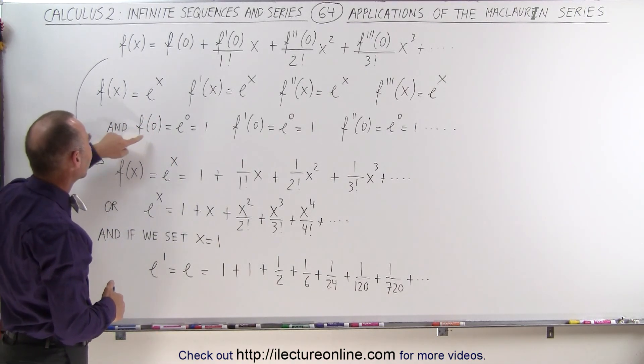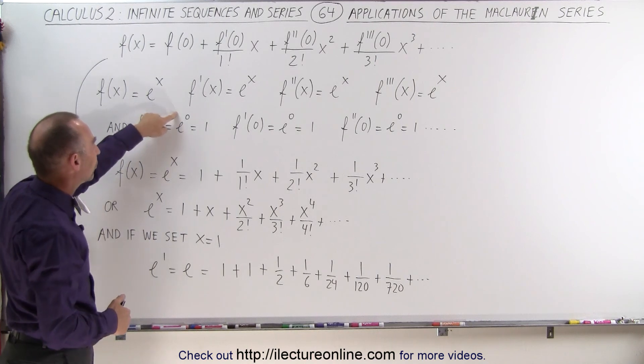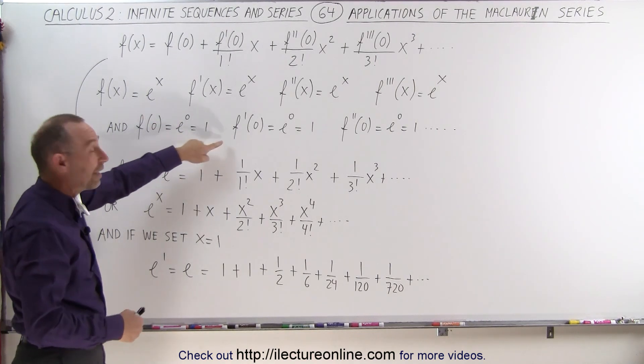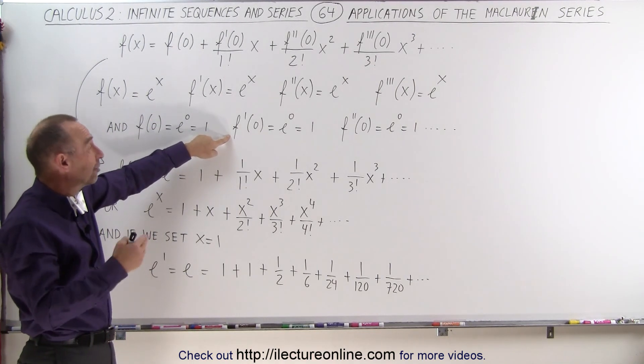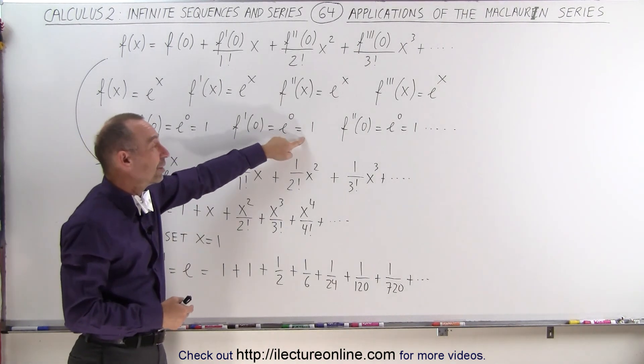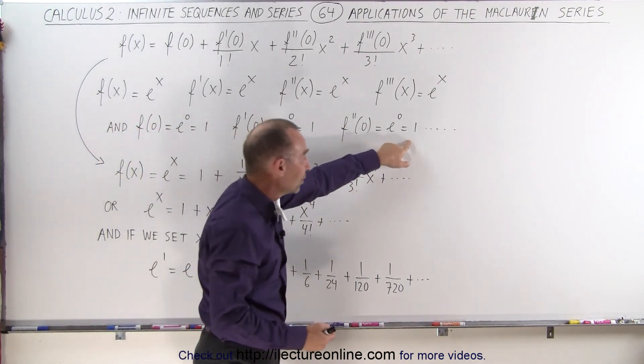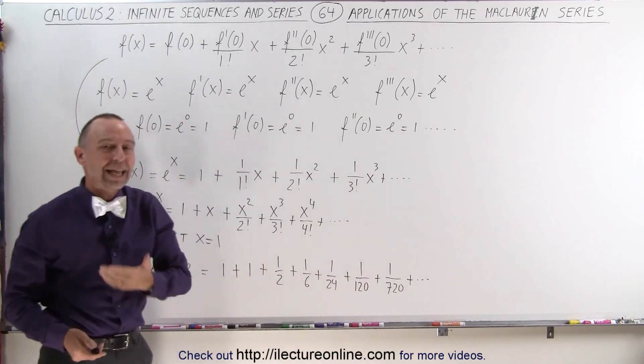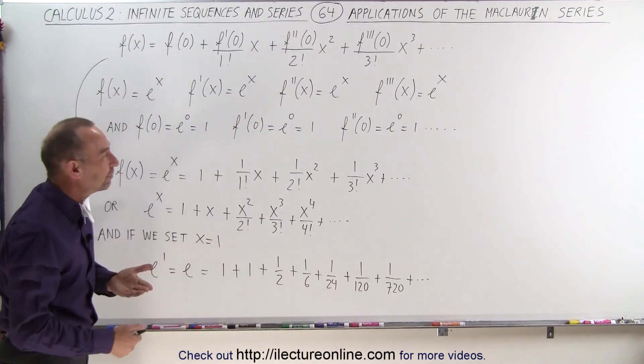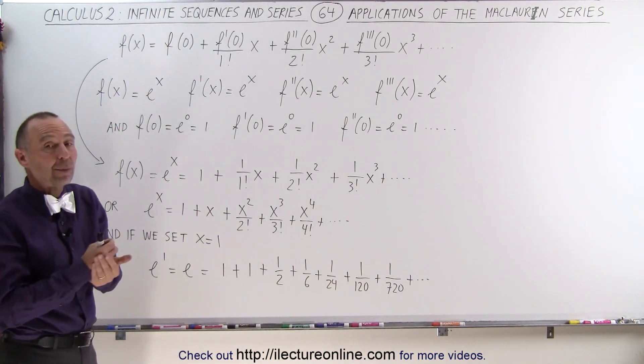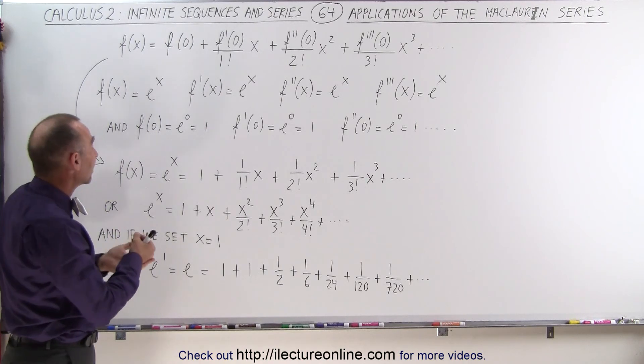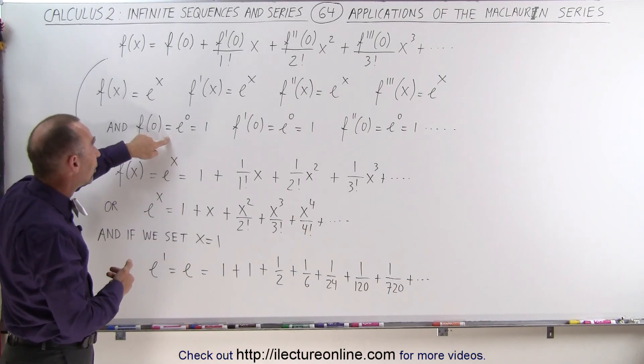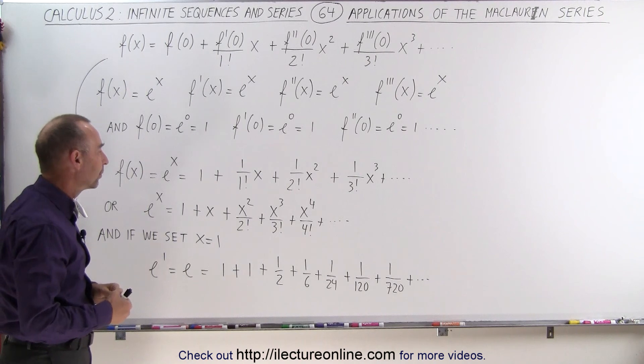So now if we evaluate the function at 0, we get e to the 0, which is equal to 1. When we evaluate the first derivative at 0, we get e to the 0, which is equal to 1. The second derivative, e to the 0, which is equal to 1. So you can see that every derivative, the nth derivative or any derivative, we evaluate the function e to the x at x equals 0 and we're going to get 1.